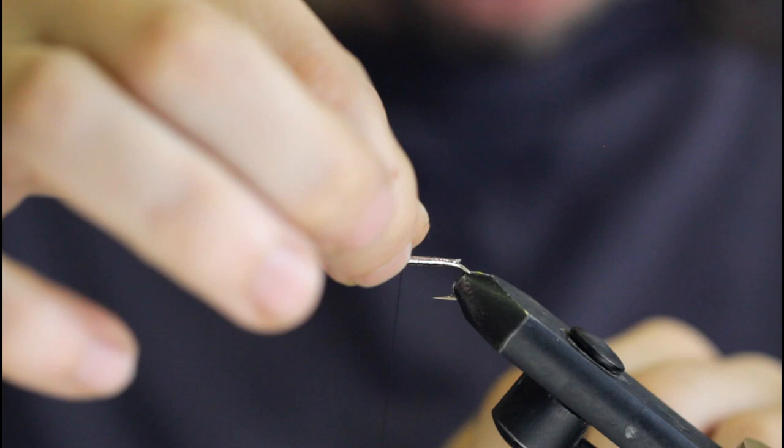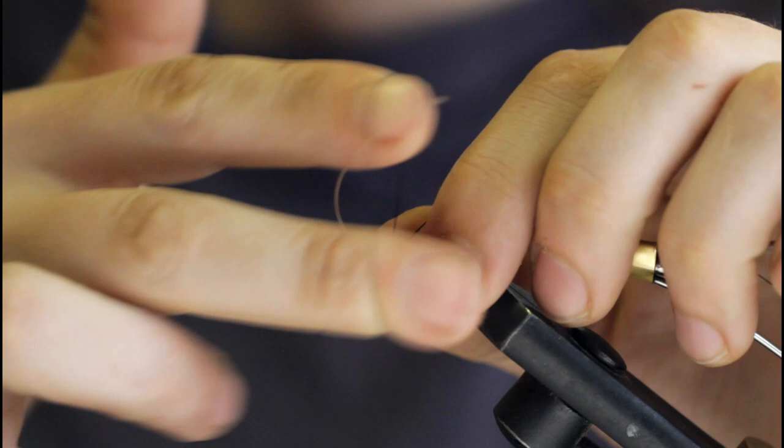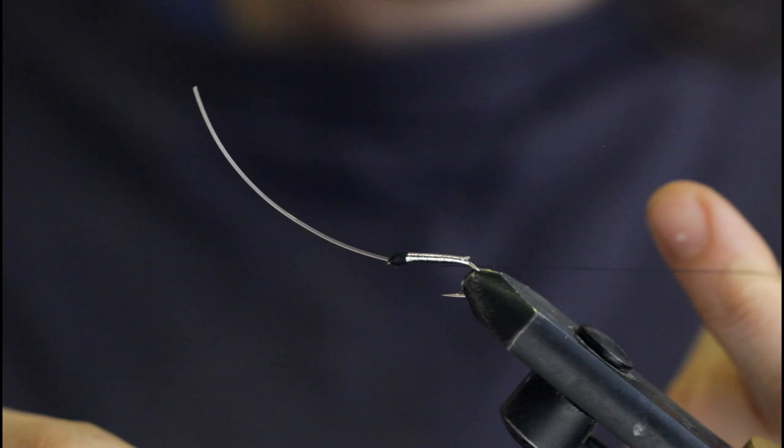It can be tricky to tie these off, so if you're not comfortable with finishing, just throw a half hitch in like this, snip it off, glue it up.